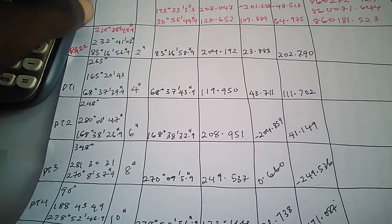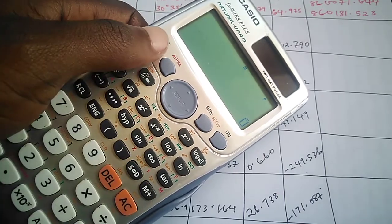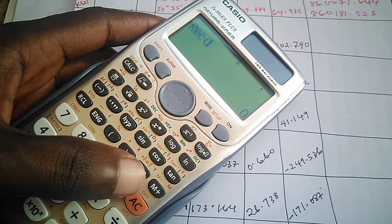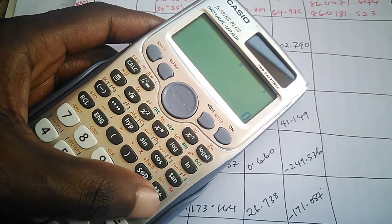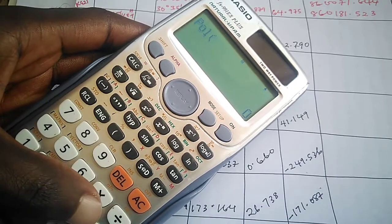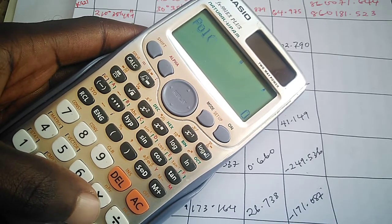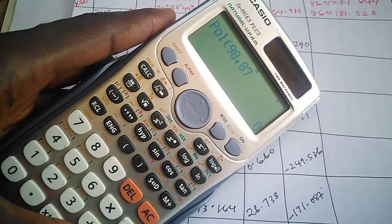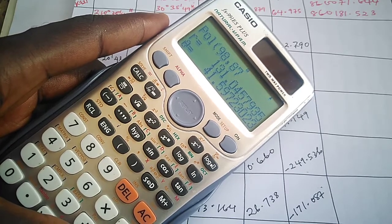I hope the point was very clear. We use the RECT function on the calculator — pressing Shift minus gives you RECT, and whenever you use this function your result will always be in northing and easting. When carrying out back computation we use the other format: Shift plus gives you POL, and with POL your results are displayed in distance and bearing. The input for POL is northing and easting.